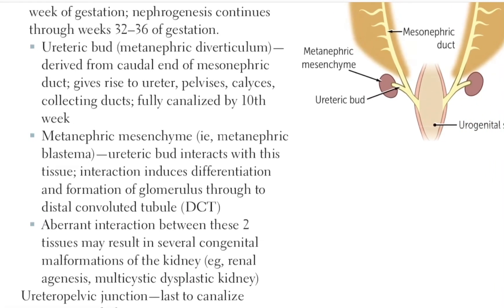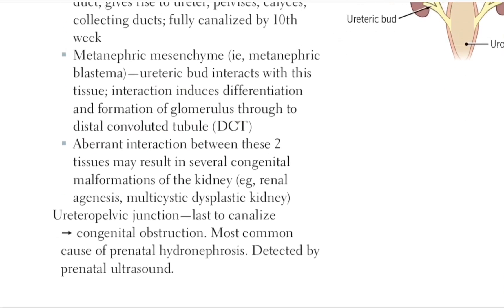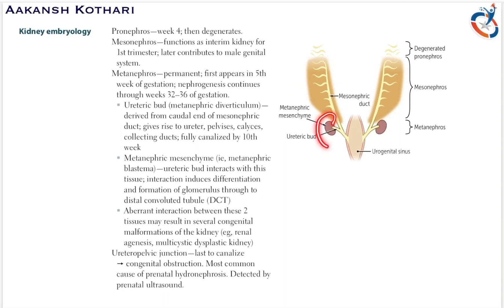This structure is called as the metanephric mesenchyme, which is also called as the metanephric blastema. The ureteric bud interacts with the metanephric mesenchyme, which induces differentiation and formation of the glomerulus through to the distal convoluted tubule of a nephron. If there is any aberrant interaction or signals have not been passed, it can lead to several congenital malformations of the kidney.